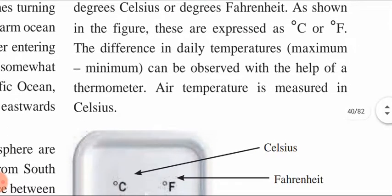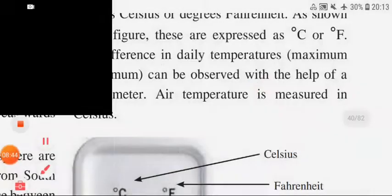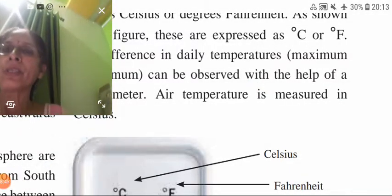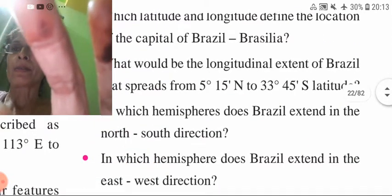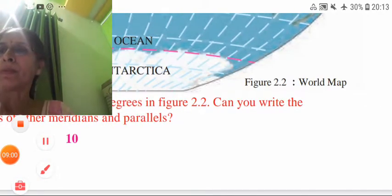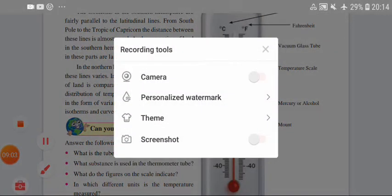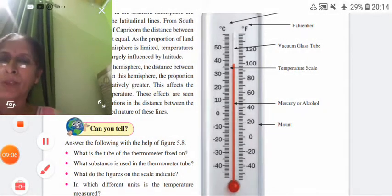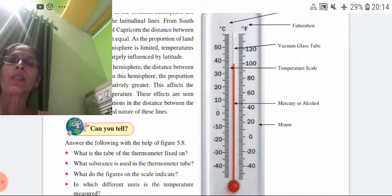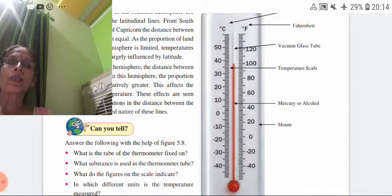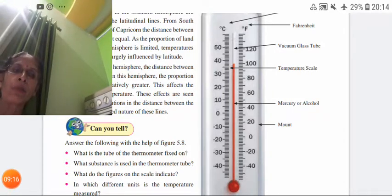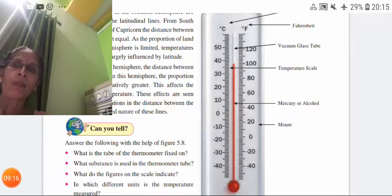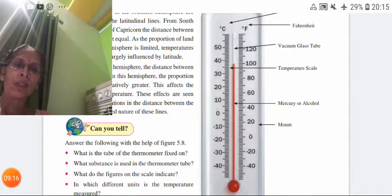My dear children, just look at this thermometer. You can see degree Celsius and degree Fahrenheit scales. There is a vacuum glass tube in between. Inside, there is a red color liquid — mercury or alcohol. There is also a mount which is shown on the thermometer diagram.